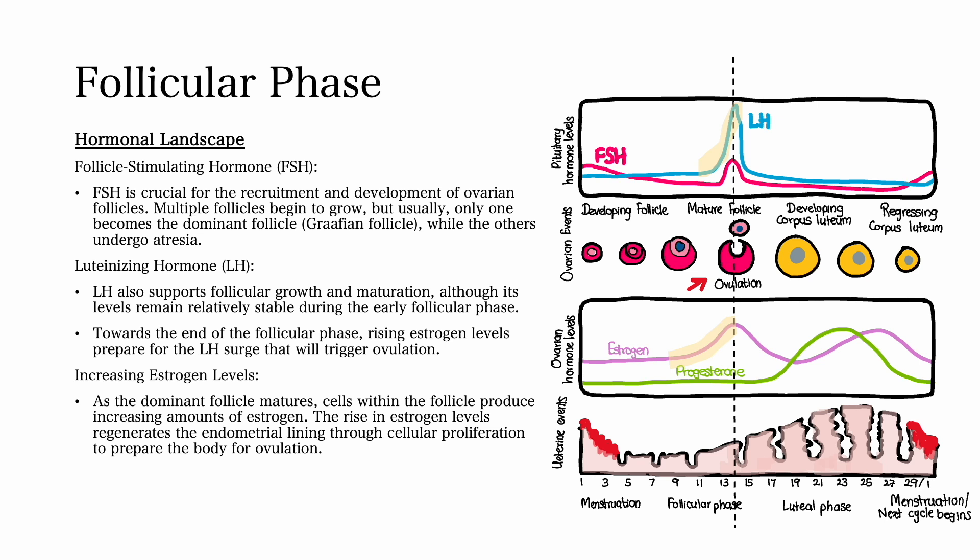As the dominant follicle matures, cells within the follicle produce increasing amounts of estrogen. The rise in estrogen levels regenerates the endometrial lining through cellular proliferation and thickening of the lining, preparing the body for ovulation.